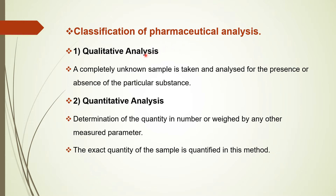Pharmaceutical analysis can be broadly classified into two types: qualitative analysis and quantitative analysis. Qualitative analysis means a completely unknown sample is taken and analyzed for the presence or absence of a particular substance — we can know if a substance is present or absent, but not its quantity. In quantitative analysis, the exact quantity of the sample is determined and quantified.